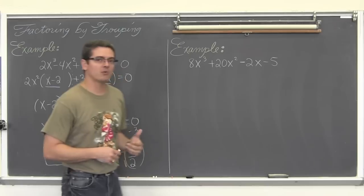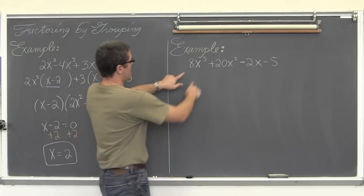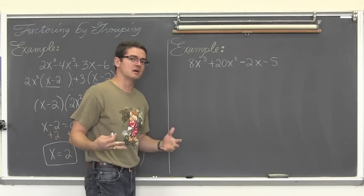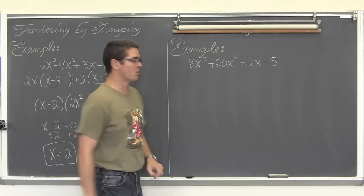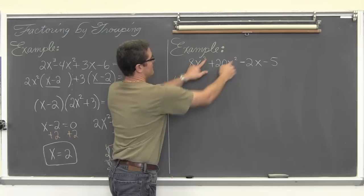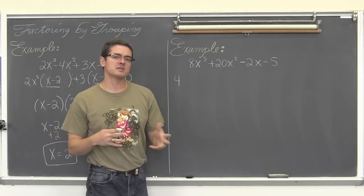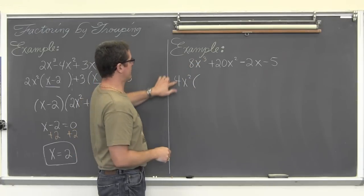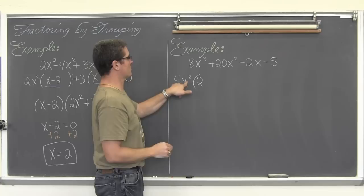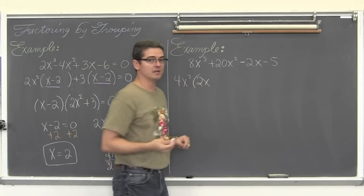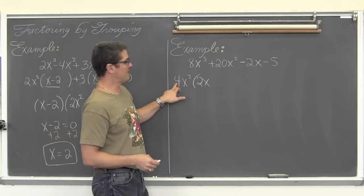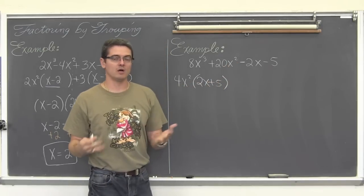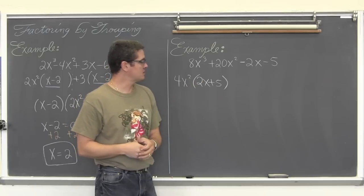If you feel like you got that, you might want to stop the video and practice on your own. What common factors do 8 and 20 have? They are both even, divisible by two, but I need to take out the biggest number — both are divisible by four, so we take out that four. They both have x's and we can take out the lowest exponent, so we take out x squared. 8x cubed divided by 4x squared: 8 divided by 4 is 2, and three x's minus two gives just one x. 20 divided by 4 is 5, and x squared divided by x squared cancels out, so we get 2x plus 5.